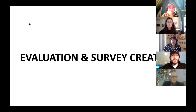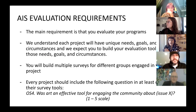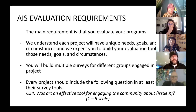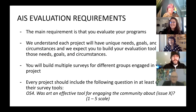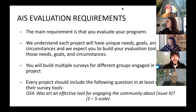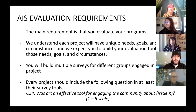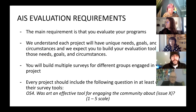First and foremost, in the surveys you all sent me — thank you for filling those out and telling me what you need today — a lot of you asked: what are the requirements? The arts and society evaluation requirement is that you evaluate your programs. That's really it. That is the primary requirement. How you evaluate your programs is going to depend on your program and your needs. We fully understand that each project will have unique goals, needs, and circumstances, and we expect you to build your evaluation tools to fit those. You will be creating multiple surveys for different groups engaged in your project.